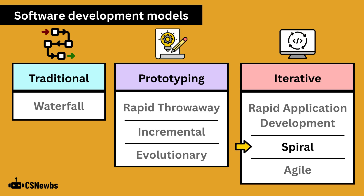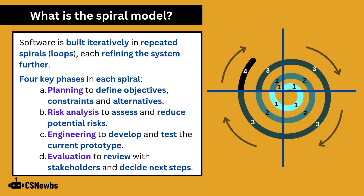The spiral model is an example of iterative software development, however it does still primarily make use of prototypes. In this model, software is built iteratively in repeated spirals or loops, each refining the system further.